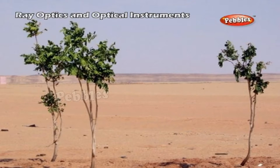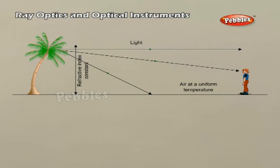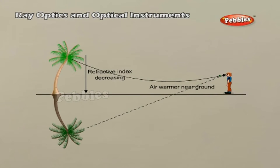Mirage. On hot summer days, the air near the ground becomes hotter than the air at higher levels. The refractive index of air increases with its density. Hotter air is less dense and has a smaller refractive index than cooler air. If the air is still, the optical density at different layers of air increases with height. As a result, light from a tall object such as a tree passes through a medium whose refractive index decreases towards the ground, so a ray of light bends away from the normal and undergoes total internal reflection. If the angle of incidence for the air near the ground exceeds the critical angle, such inverted images of distant tall objects cause an optical illusion to the observer.